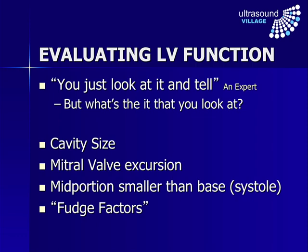How do you actually do this? If you ask an expert, they'll tell you that you just look at it while you're doing the scan and you can sort of tell — and that works well if you've got a lot of experience. But when you're starting out, you need to know what to look for. The most important thing is to look at the cavity size and the change in cavity size between diastole and systole. You can then confirm that impression by looking at the mitral valve excursion and by checking that the mid portion is smaller than the base during systole if it's normal, or that this isn't happening if it's abnormal. If you want a more accurate estimate, you can use some simple calculations with a few fudge factors.